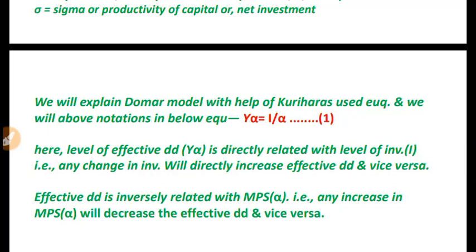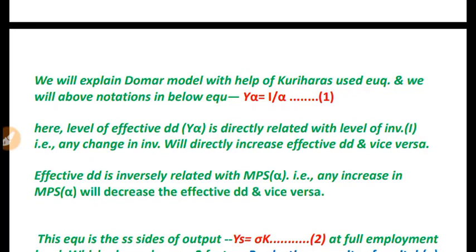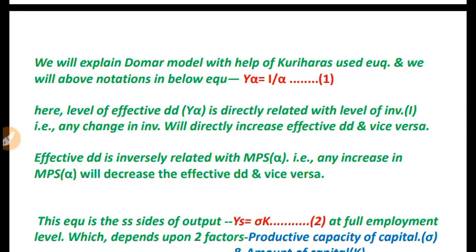Using the Kurihara equation, the demand-side (Keynesian) equation is: Y_α = I / α (i.e., investment divided by MPS), which equals I × (1/α), that is, investment times the multiplier. The level of effective demand is directly related to investment — when investment increases, effective demand increases. MPS (α) is inversely related — when MPS increases, effective demand decreases.